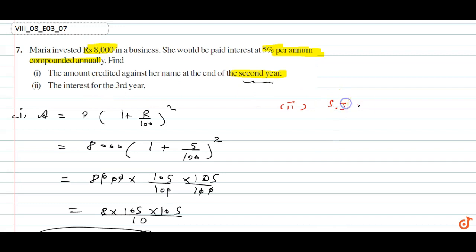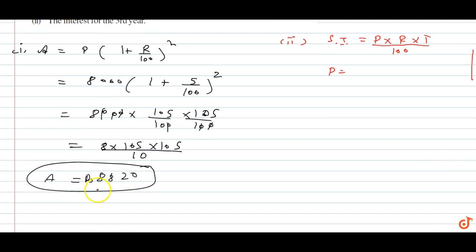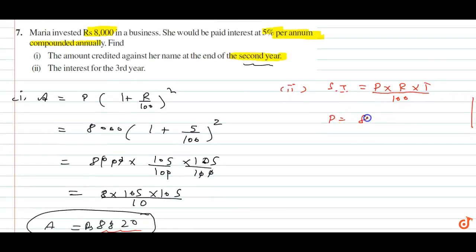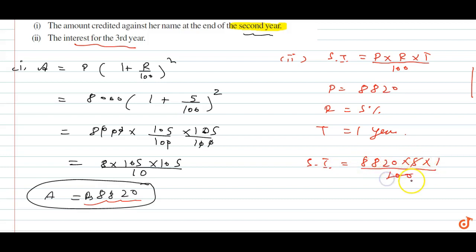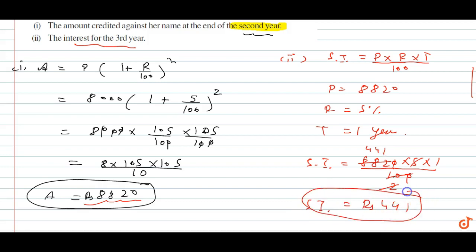Now for the interest for the 3rd year, we use the simple interest formula: Principal × Rate × Time / 100. The principal for the 3rd year will be the amount from the 2nd year, which is Rs. 8820. Rate is 5% and time is 1 year. So simple interest = 8820 × 5 × 1 / 100 = Rs. 441.